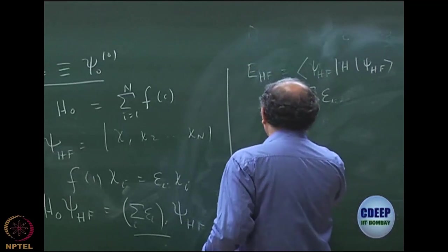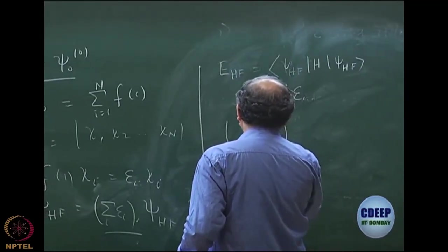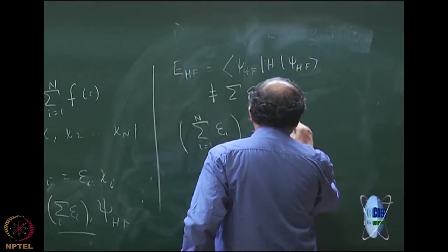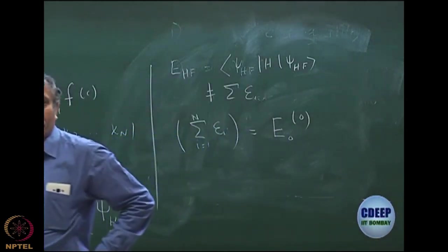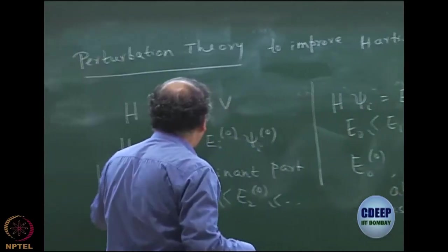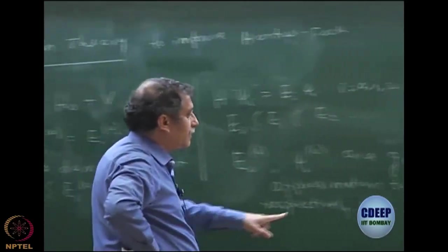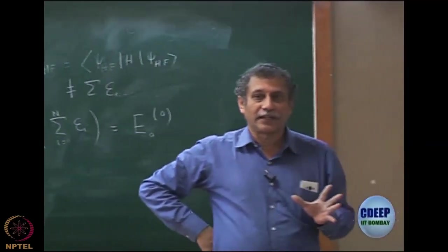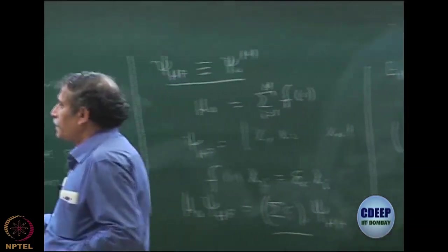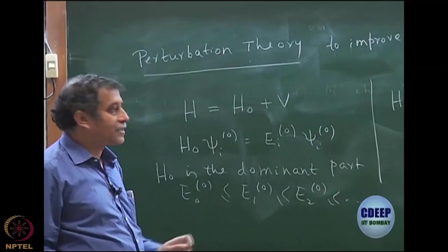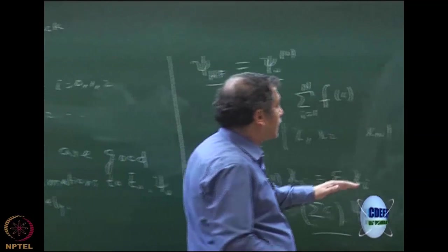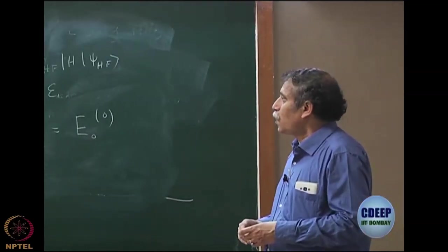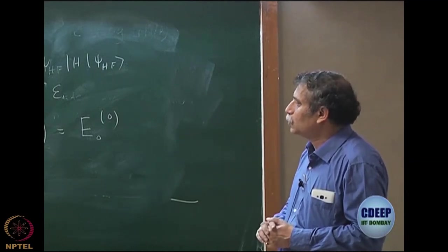By my definition, E₀⁰ is the ground state eigenvalue of H0, which is Σεᵢ — not the Hartree-Fock energy. That would have been a very nice idea: ψ₀⁰ is the Hartree-Fock wave function and E₀⁰ is the Hartree-Fock energy, but as I see so far it is not the case. E₀⁰ is just the sum of the orbital energies. Nevertheless, this H0 becomes a very nice starting point for perturbation theory.